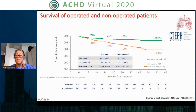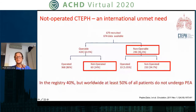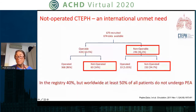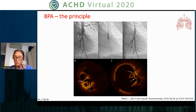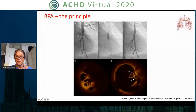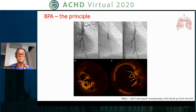Survival in operated patients is much better compared with non-operated patients — this is very clear. If you remove the obstructions, outcomes are much better. But about 50% remain unoperated; in specialist centers like London it may be only 35%, but worldwide it's about half. There is also a number of patients who have residual pulmonary hypertension after pulmonary endarterectomy. BPA works by pushing thromboembolic material to the side, as shown in OCT cross-sectional images — you can see the material displaced to create a lumen.